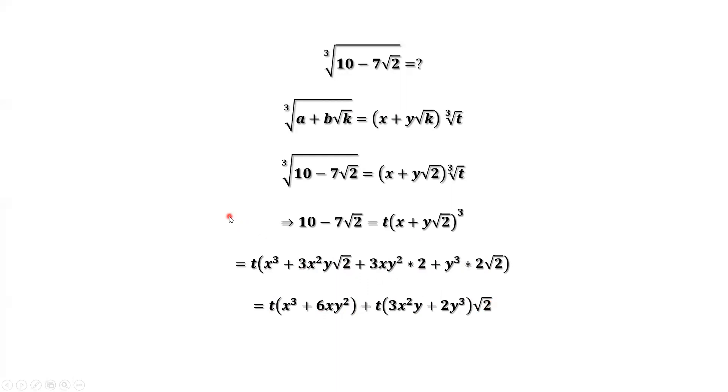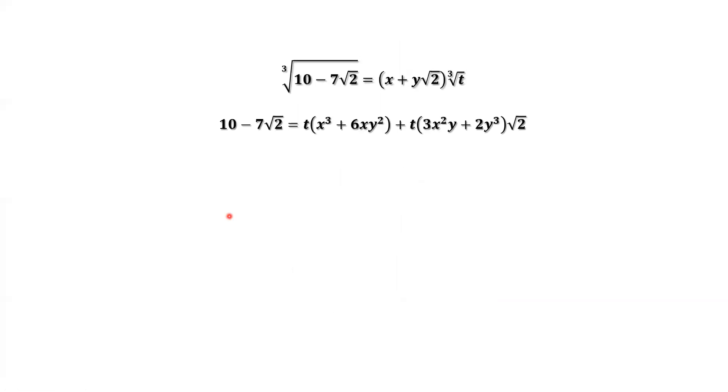Why are we doing this? We want to compare both sides. What does this mean? This means the left hand side of 10 without square root of 2 should be equal to the first part. Negative 7 with square root of 2 should be this part. In summary, t times x to the power of 3 plus 6 times x times y squared equals 10. t times 3x squared y plus 2y to the power of 3 equals negative 7.